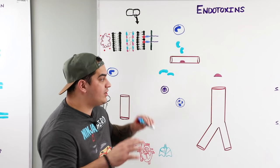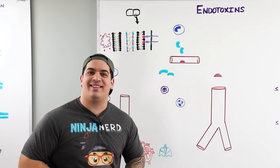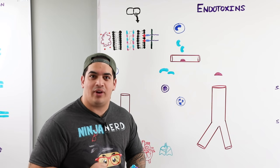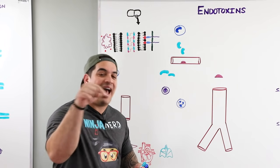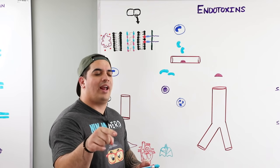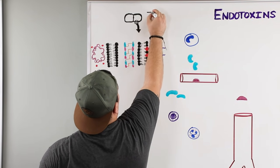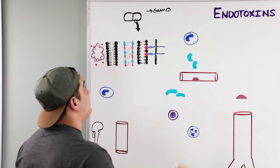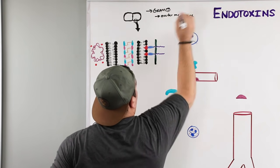Let's get into endotoxins first. What kind of bacteria produce endotoxins? From our discussion of bacterial structure and function, the endotoxin is located in the outer membrane of the bacteria. Which bacteria have an outer membrane — gram positive or gram negative? Gram negative bacteria. Therefore, endotoxins can only be found in gram negative bacteria.